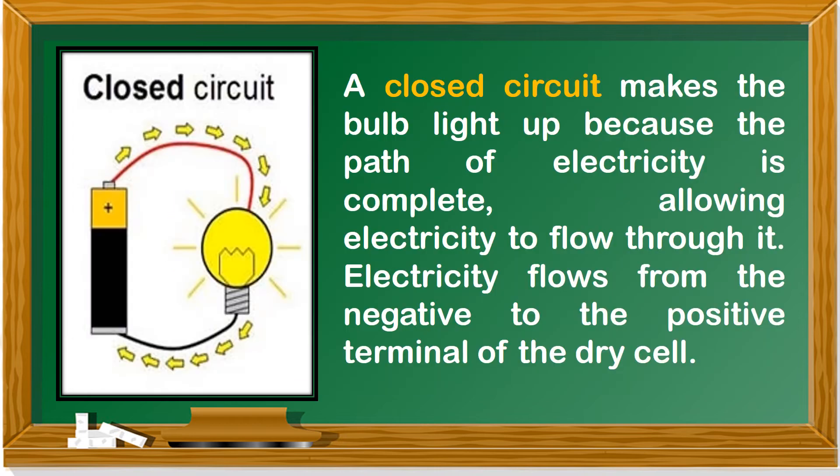A closed circuit makes the bulb light up because the path of electricity is complete, allowing electricity to flow through it. Electricity flows from the negative to the positive terminal of the dry cell.